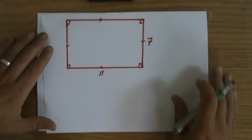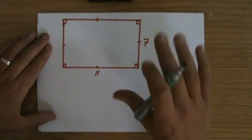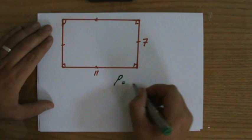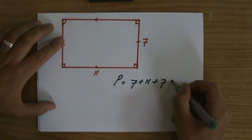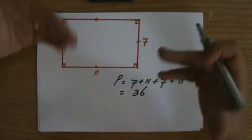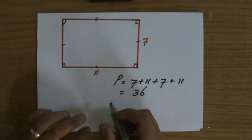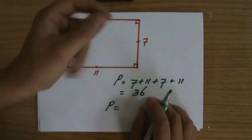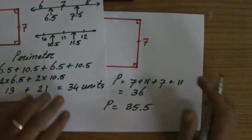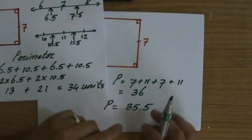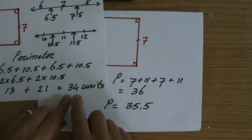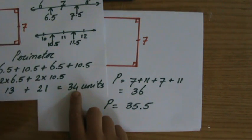Now I want to show you the typical mistake students make. For the lower bound perimeter, what they do is calculate the perimeter first: seven plus eleven plus seven plus eleven equals thirty-six. Then they take the lower bound of that answer, saying the lowest possible perimeter is thirty-five point five. But that is wrong. You do not work with the given values and then take the lower bound of your answer — you have to take the lower bound first and then find the perimeter. That thirty-four units is your final answer; you do not take the lower bound of it again.